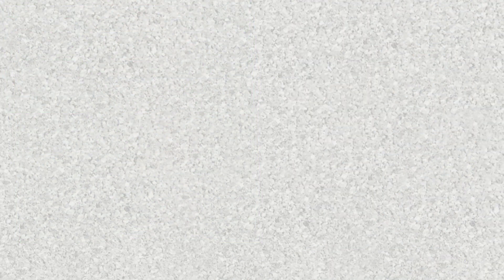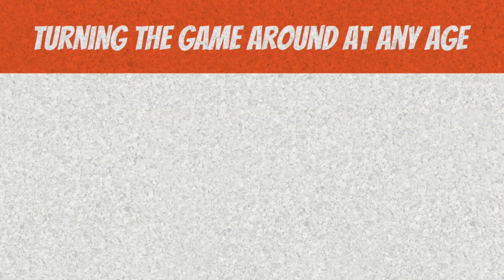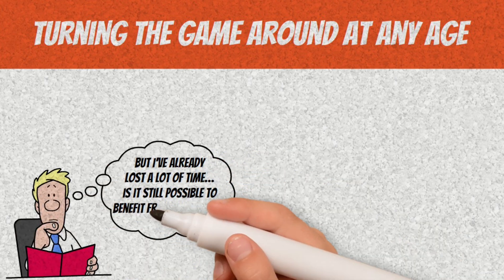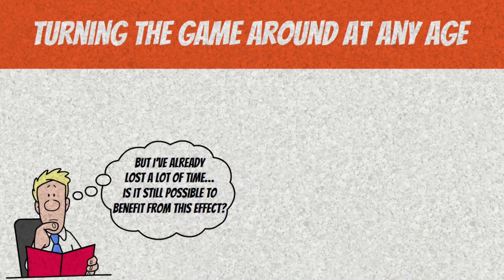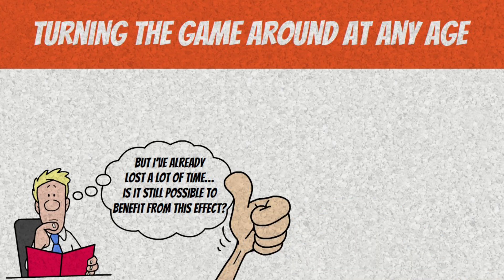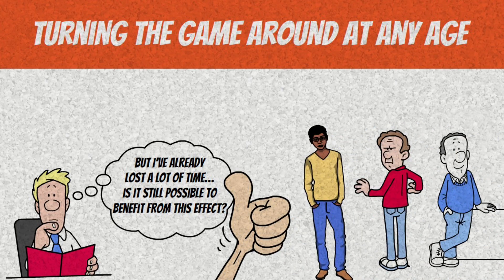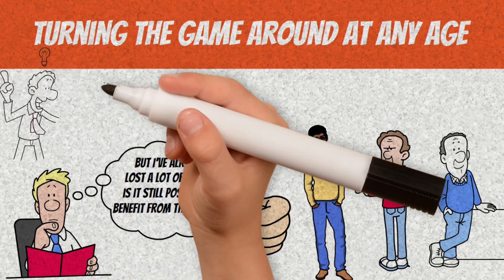Turning the game around at any age. You might be thinking, but I've already lost a lot of time. Is it still possible to benefit from this effect? The answer is yes. It doesn't matter if you're 20, 40, or 60. What matters is starting now and applying the 8-4-3 rule consistently.